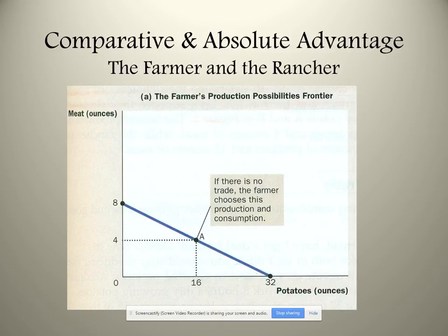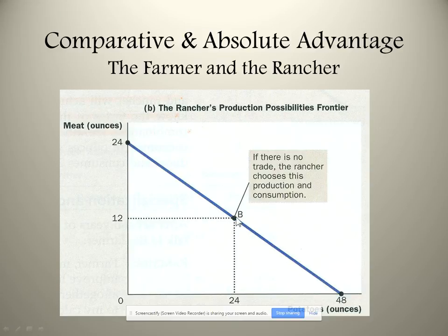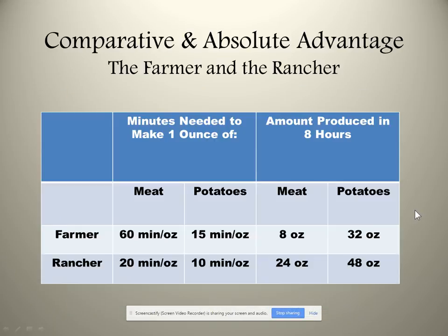The rancher can make 24 ounces of meat or 48 ounces of potatoes. The rancher chooses to produce at point B, which means 12 ounces of meat and 24 ounces of potatoes. The rancher has more production possibilities and therefore can consume more.